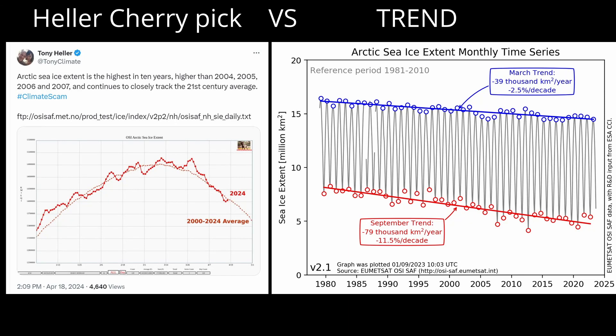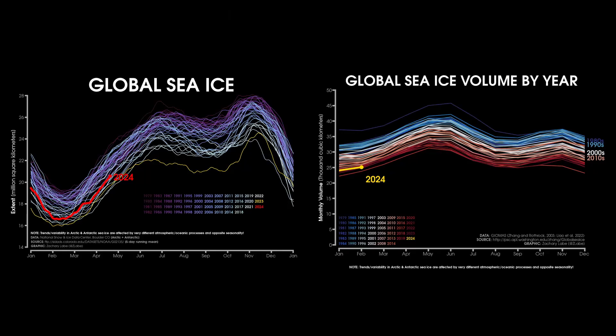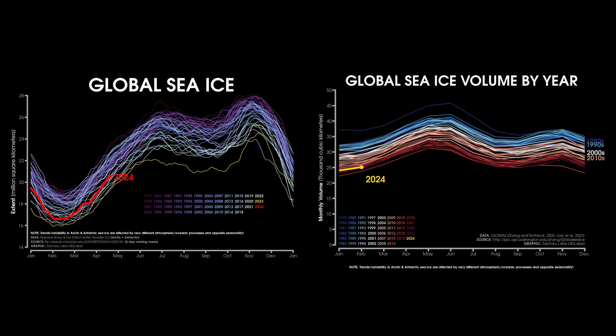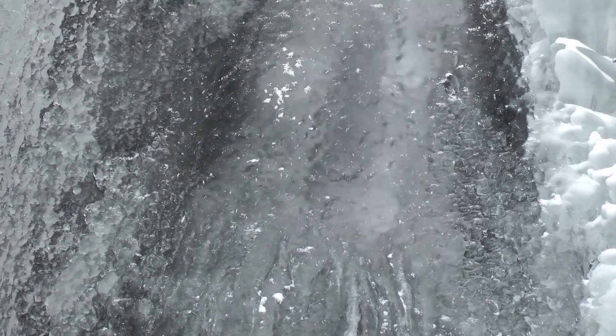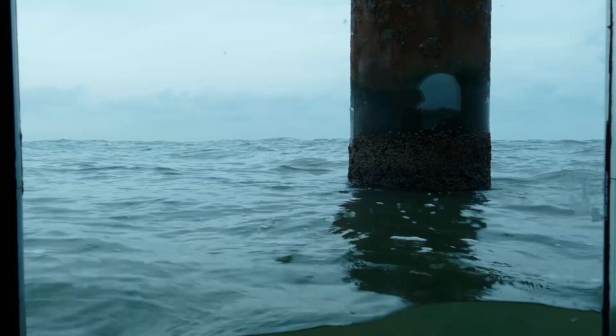Don't be fooled by short-term variations and Heller's cherry picks. It is best to look at global sea ice, or even better, global ice on land and sea, which continues to decline each decade at an accelerating rate. And as the land ice goes into the sea, it contributes to sea level rise.